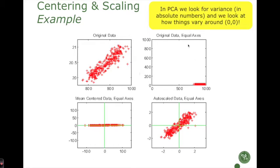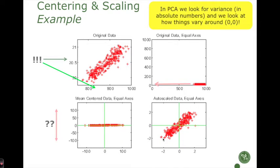The axes here are blown up to be the same on x and y, so this is what the computer will see — and this is not optimal. What we do is center the data, getting 0,0 into the middle of the data, and then scale the data so the scale on each axis is the same. What we end up with is that what the computer sees matches what we see when we visually plot the data.